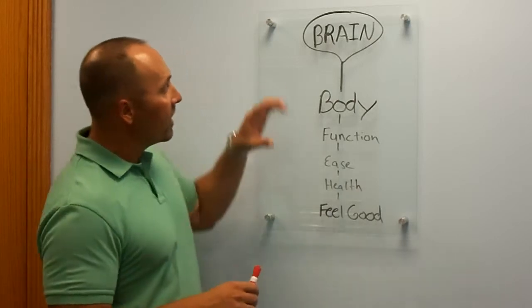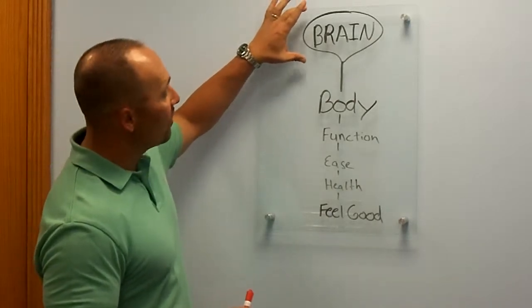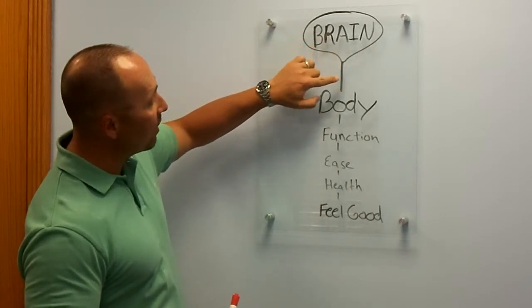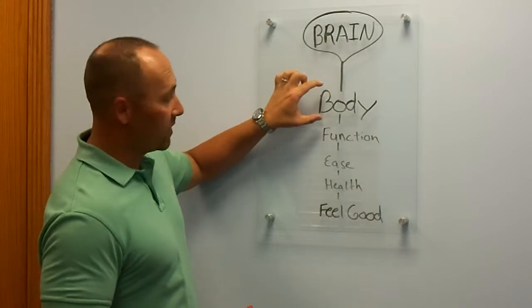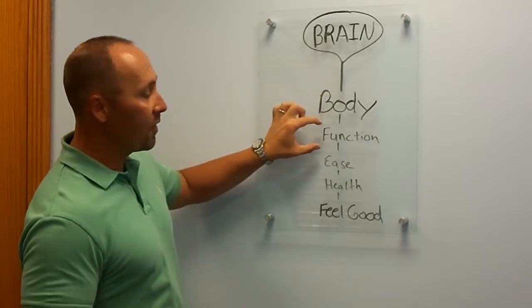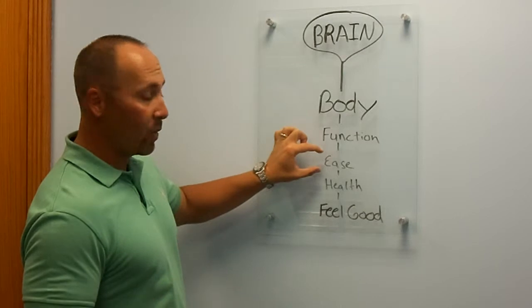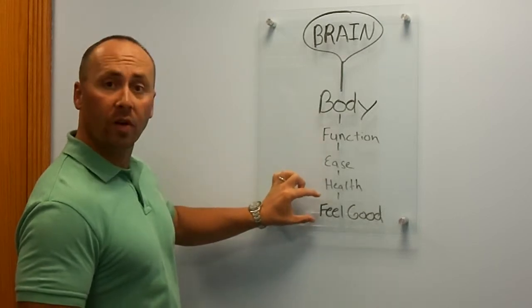And how that body works is up on this diagram here. You have your brain that sends messages down your spinal cord, and that signal goes to your body. If that nerve is clear and free with zero pressure on it, that system of your body has function, the body works with ease, your body is healthy, and you feel good.